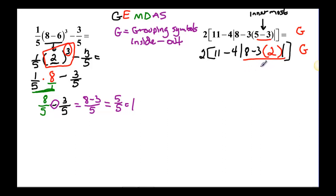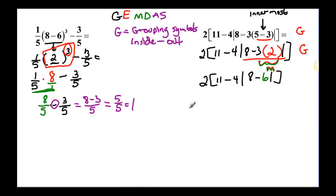Inside the absolute value, this is a complicated problem — we have to look at our multiplication inside there. So: 2 bracket, 11 minus 4, absolute value, and then 8 minus — I have to do the multiplication. 3 times 2 is 6. Now we have to deal with the absolute value grouping symbol: 2 times a bracket, 11 minus 4, absolute value. Filling that in, 8 minus 6 is 2. We subtracted and got that result.